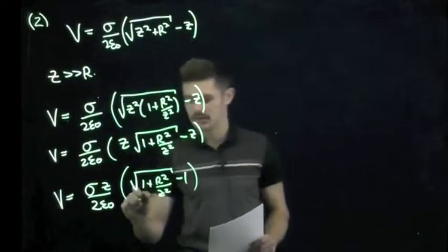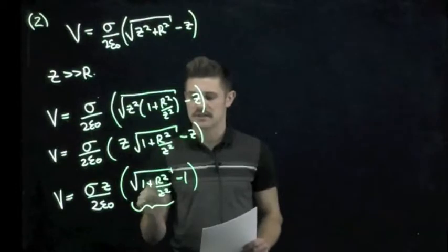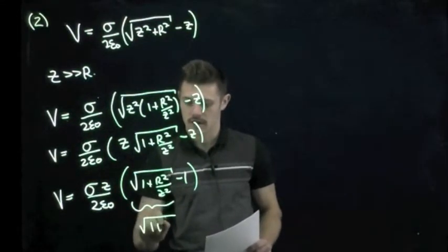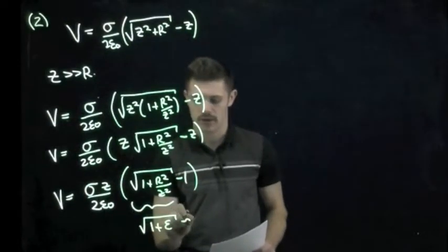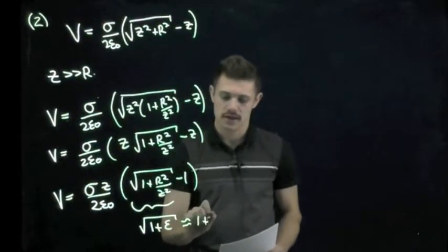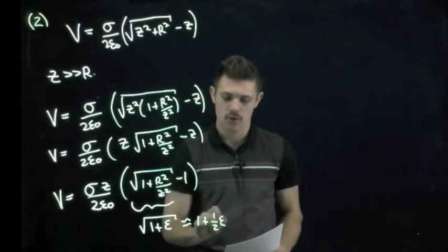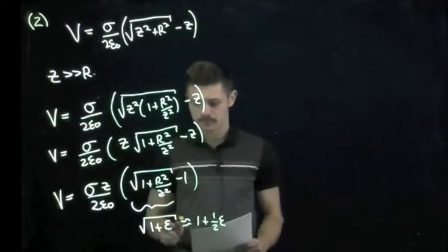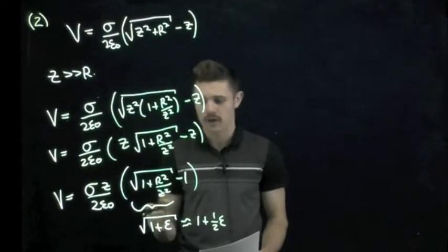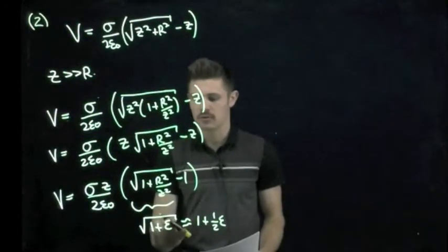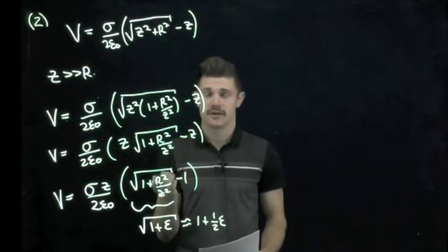And now this is the term that we want to work with because we can see that in the square root here we have a setup kind of like one plus epsilon, which the binomial expansion tells us has the value of one plus one half times epsilon. This is the identity that you want to try to remember.